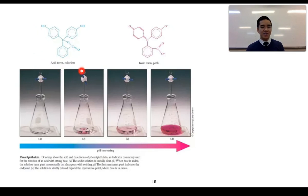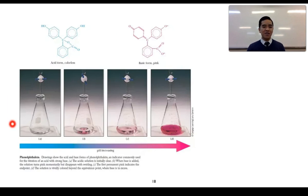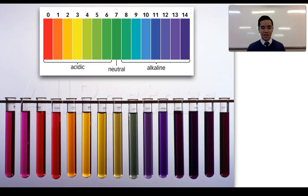In an acidic solution we have the colorless form of phenolphthalein, whereas as we increase the pH going to a more basic solution, phenolphthalein's structure changes to a form that gives off a pink color. By increasing the pH of a solution, perhaps by adding a base, we can see these color changes occur — going from colorless in an acidic solution to a light pink and eventually a deep pink or magenta. Universal indicator is a common indicator made up of five different indicators that give a range of colors.